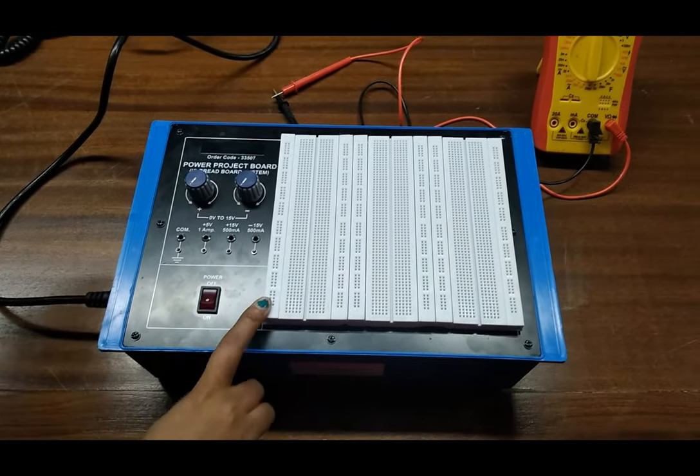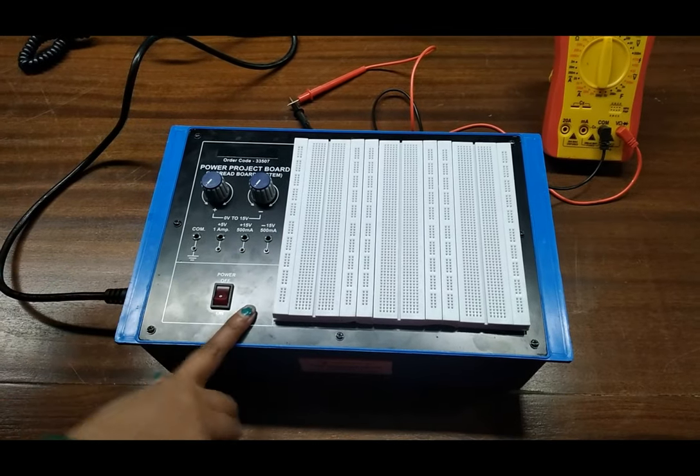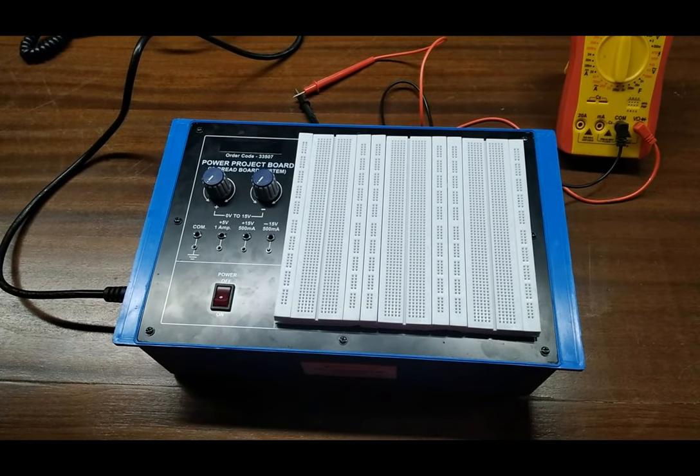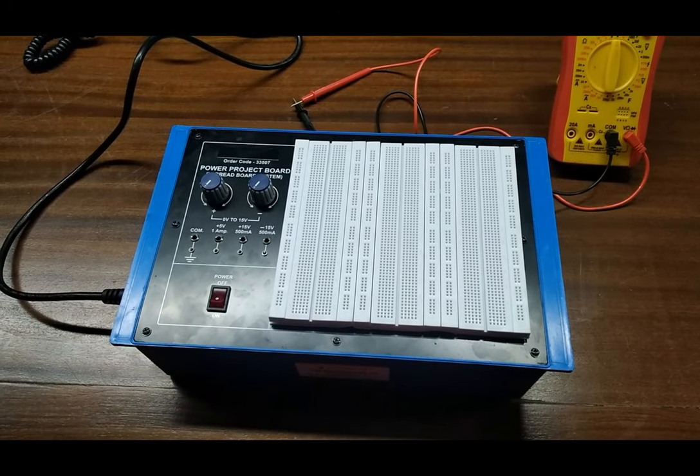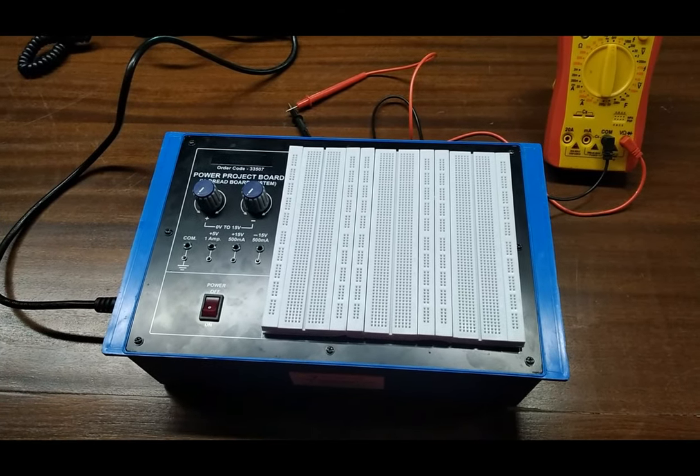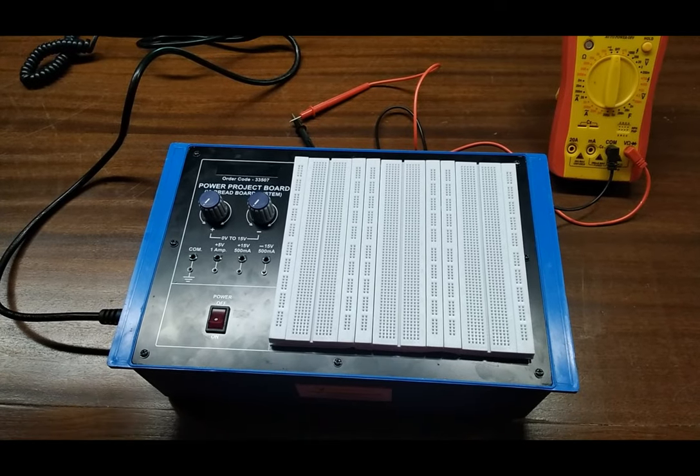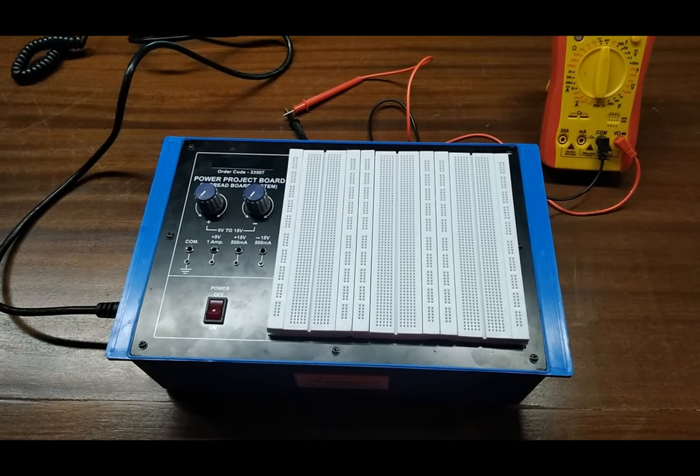This half terminal strip has total 320 tie points for different types of connections. This is a full terminal strip, it has total 640 tie points for ICs and different types of connections.